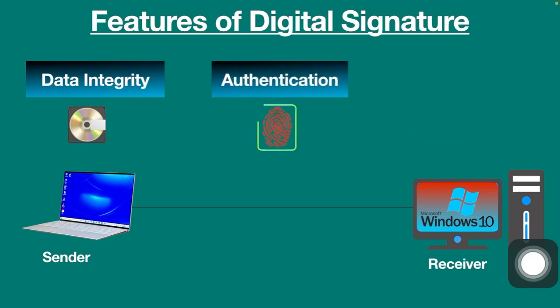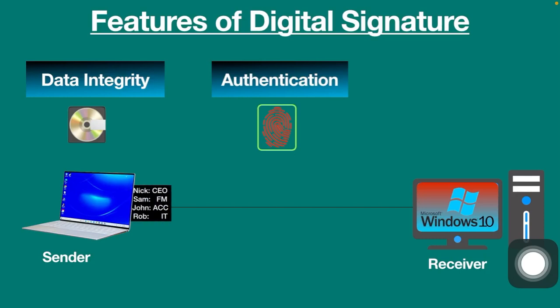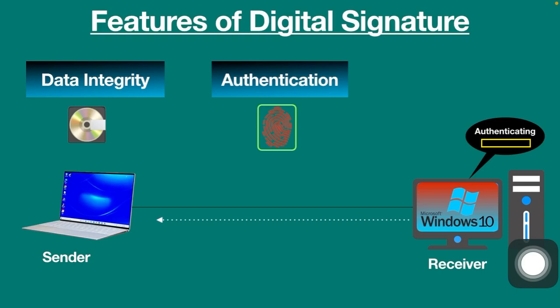The second feature is authentication. When you receive a sensitive file, it's really important to authenticate the source. For example, when you receive a list of your employees along with a request for their salaries, it's important to authenticate the source of that request before sending out a response.